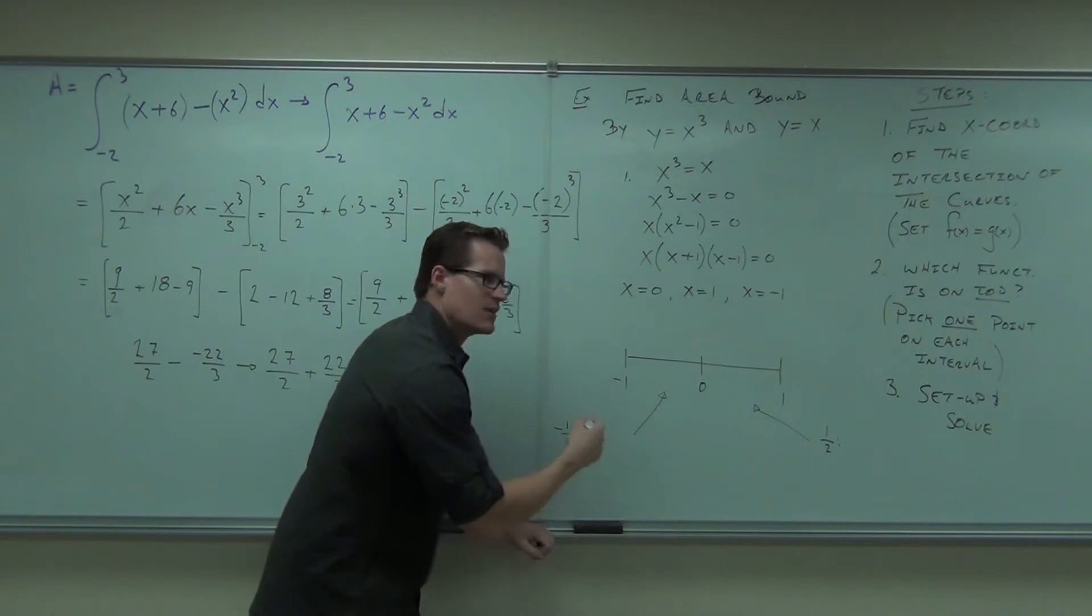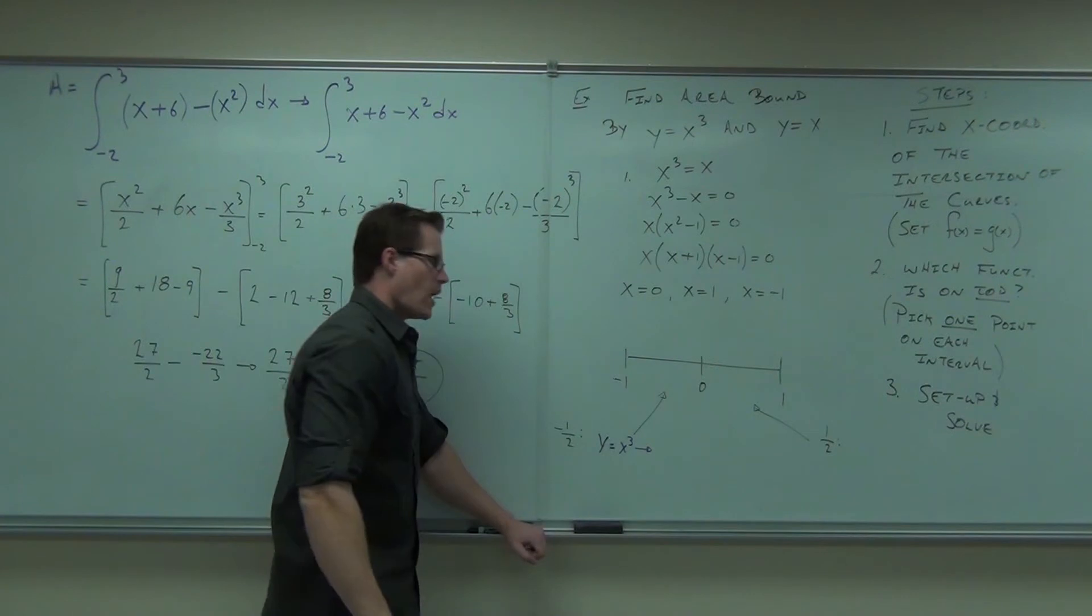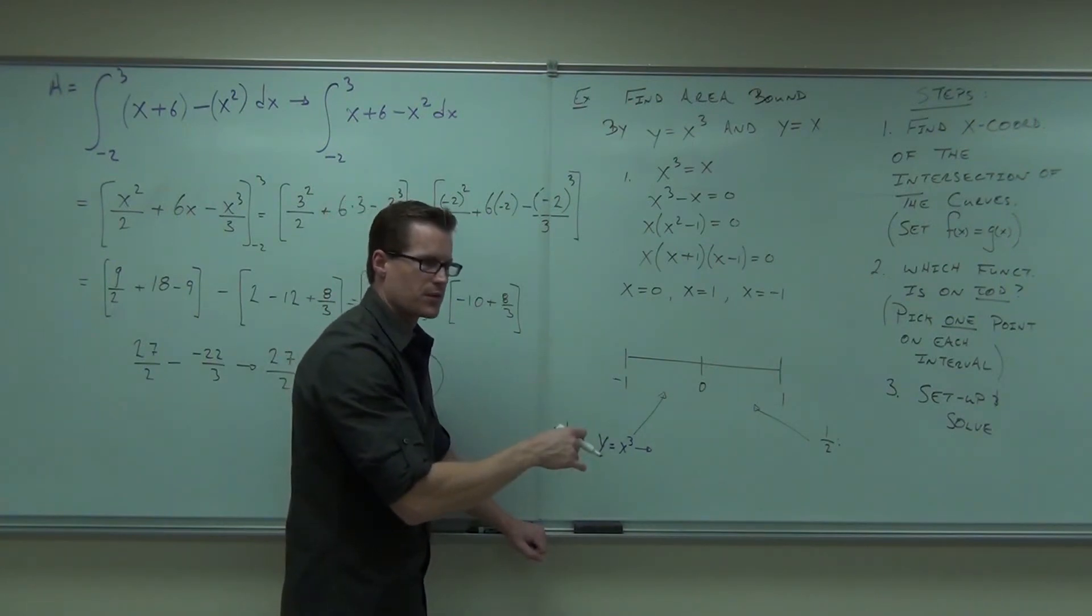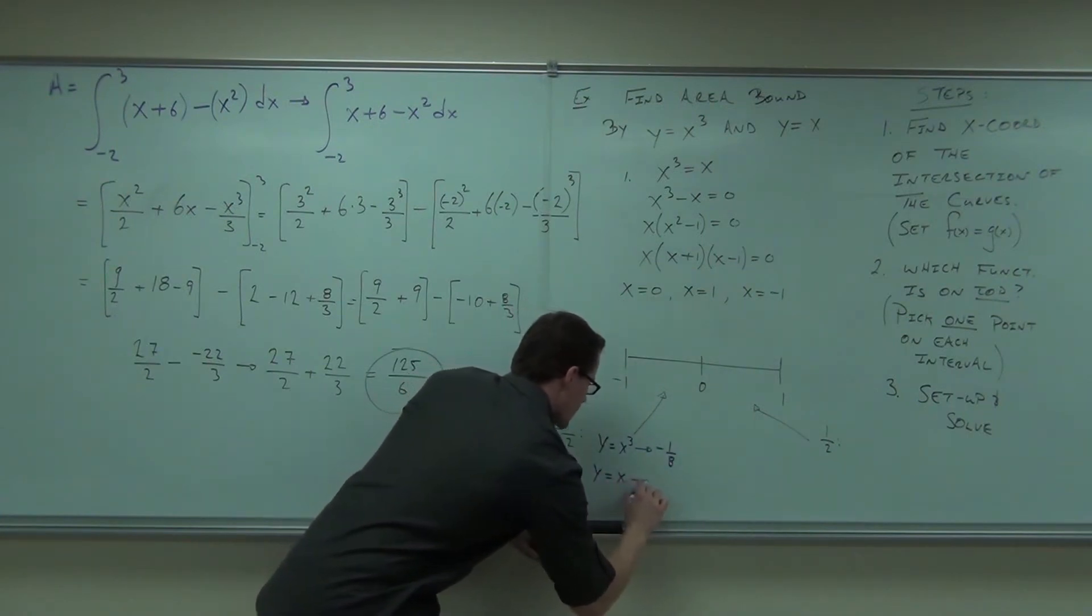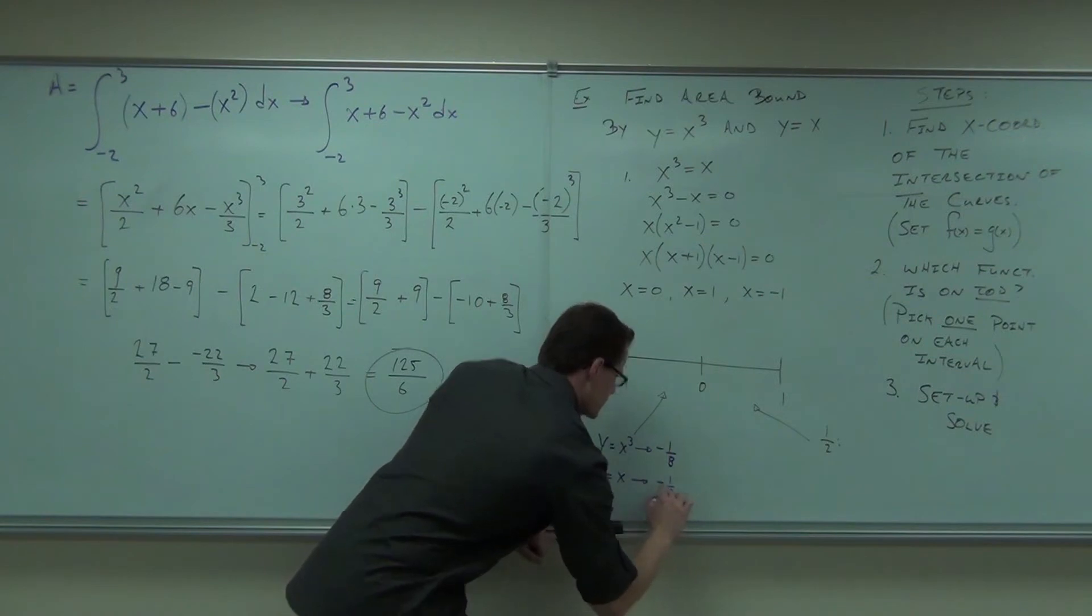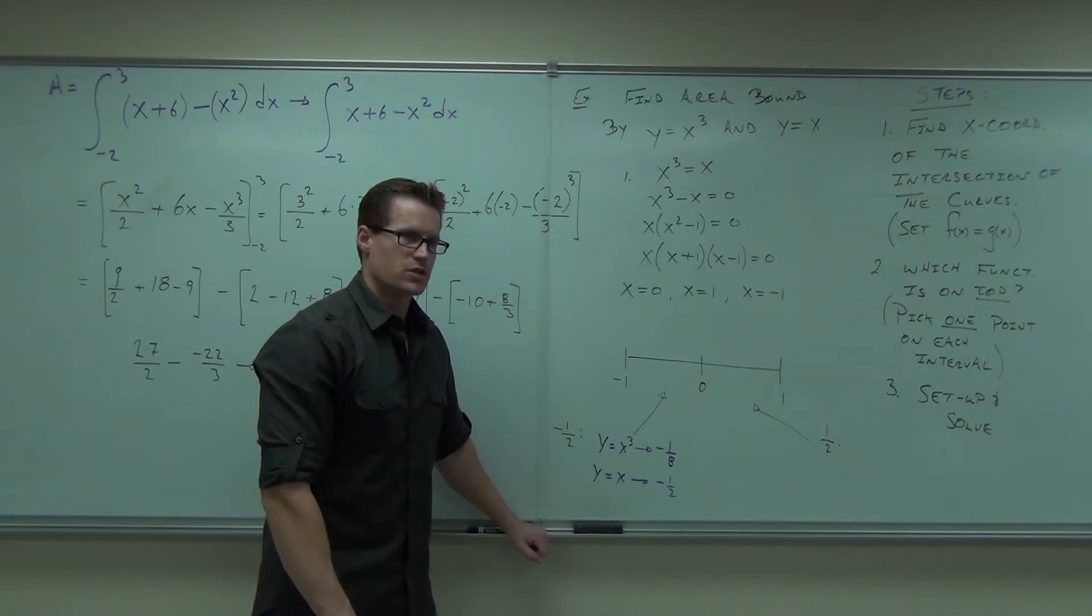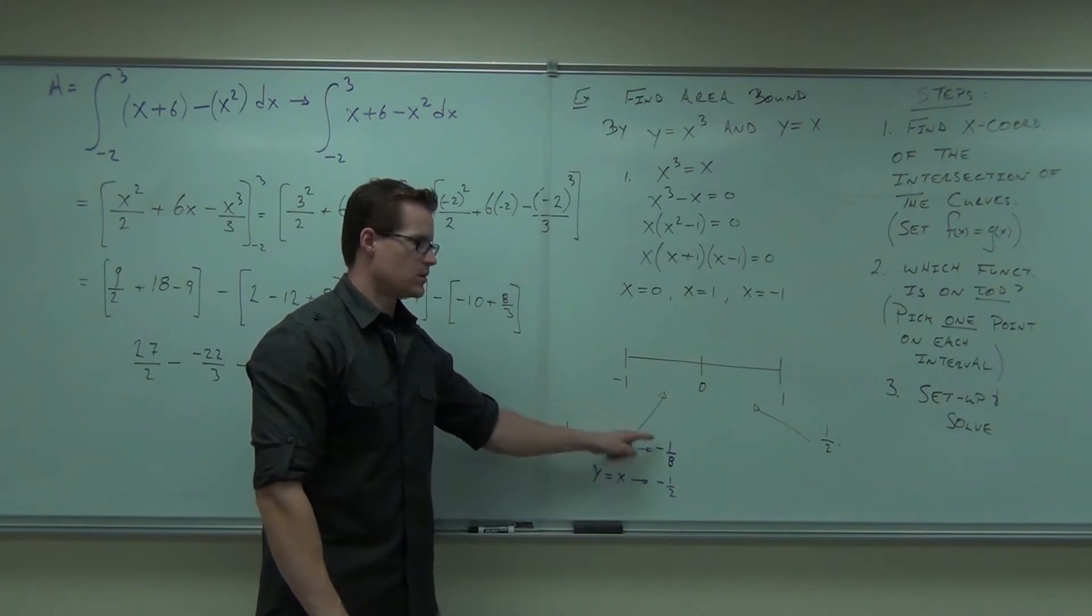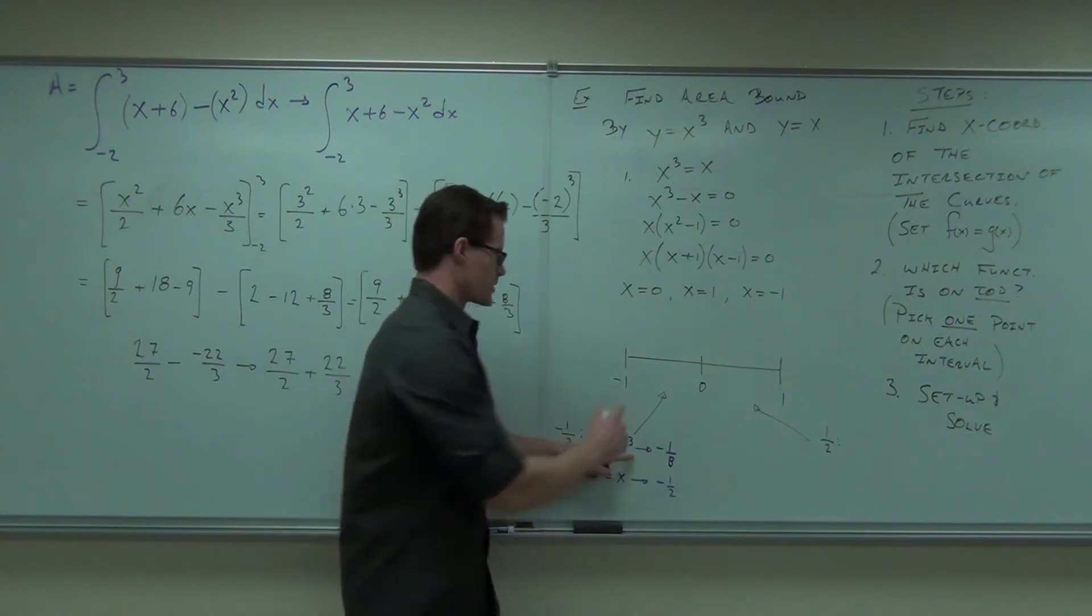If I'm testing negative one half, y equals x cubed, and when I plug in negative one half, it's going to give me negative one eighth. If I test this in the y equals x, it's going to give me, well, this is pretty easy, negative one half. Now, think carefully, which one's on the top? This one's actually bigger than that number, right? It's bigger. So this one is on the top.